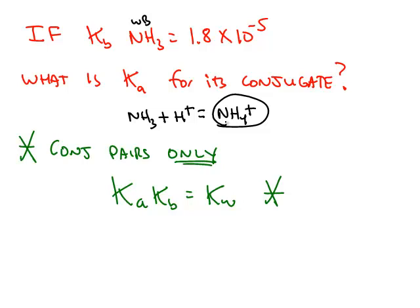The Ka value of conjugates like this one are not listed anywhere in books. They don't list them because you have this formula that lets you calculate one K value if you know the other one. For conjugate pairs, and for conjugate pairs only, Ka times Kb equals Kw.